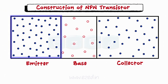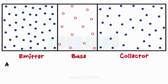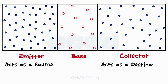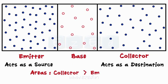These three regions are not of equal area. The emitter acts as a source whereas the collector acts as a destination of charge carriers. Thus the collector occupies the highest area to collect the maximum electrons, then the emitter, and lastly the base, which is the smallest among the three.